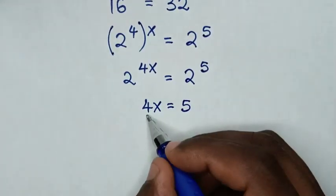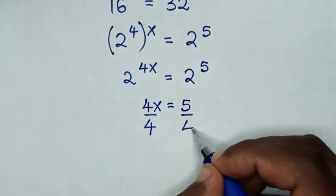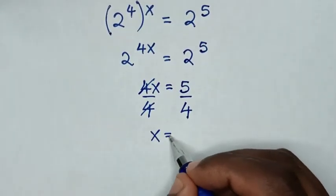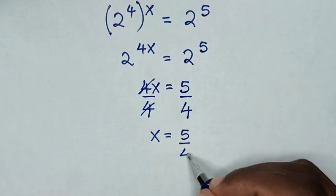Now to find the value of x, we will divide by 4 in both sides, so this and this will cancel, then x is equal to 5 over 4.